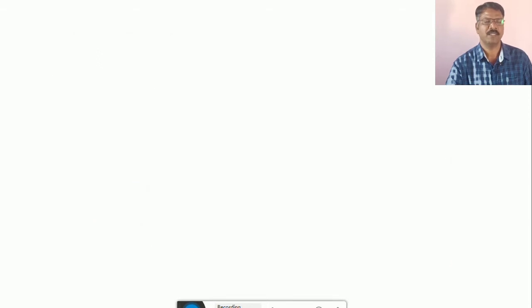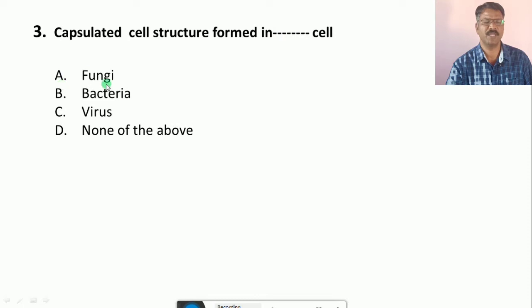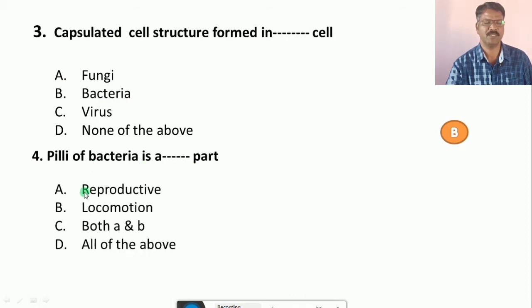Question number 3: Capsulated cell structure formed in... Their options are A. Fungi, B. Bacteria, C. Virus, D. None of the above. Their correct answer is B, that is Bacteria. Question number 4: Pili of Bacteria is... Their options are A. Reproductive parts, B. Locomotory parts, C. Both A and B, D. All of the above. The correct answer is B, that is Locomotory part.